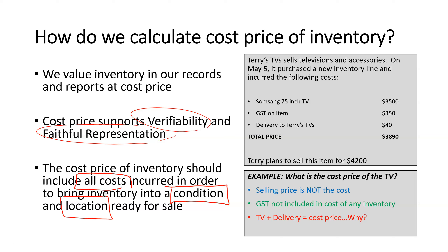On the right here we have a scenario where Terry's TVs has purchased a new inventory line and they've incurred the following costs: the cost of the item itself — the Somsang 75-inch TV — some GST on that item of 10%, and a delivery charge from the supplier to their business. Terry plans to sell this item for $4,200. So what is the cost price of the TV?